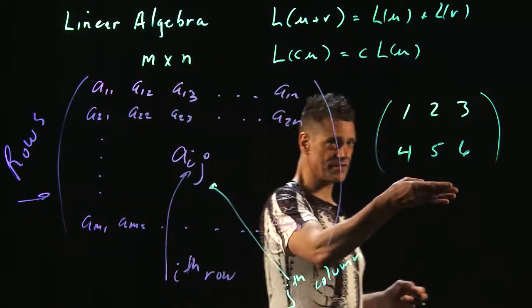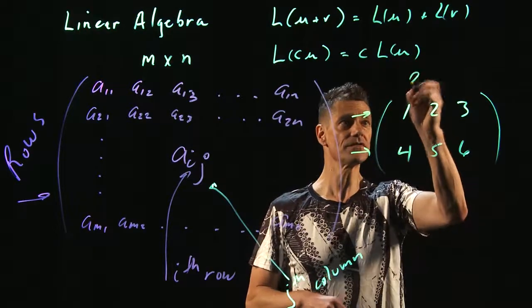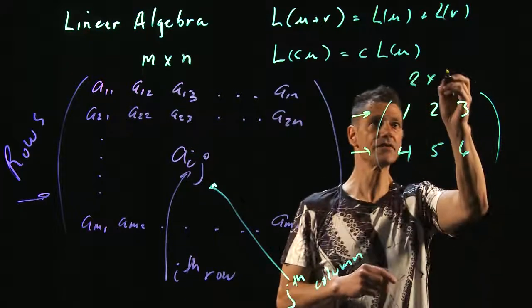So, what kind of matrix is this? Well, first, you count the number of rows. There are two rows. So, this is a two by the number of columns, it's one, two, three. This is a two by three matrix.